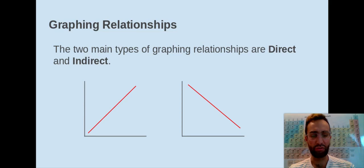One of our last things we're going to discuss is graphing relationships. So there's two main types of graphing relationships, direct and indirect. Your direct is the one on the left, so as your x-axis quantity increases, your y also increases.